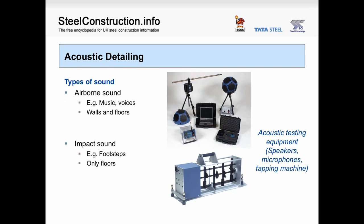Acoustic detailing in buildings needs to consider two different types of sound: airborne sound and impact sound. Airborne sound, such as music and voices, is important for both walls and floors to attenuate. Impact sound, such as footsteps, is really only important for floors. The diagram on the slide shows some typical sound insulation testing equipment: speakers, microphones, and a tapping machine for impact sound.